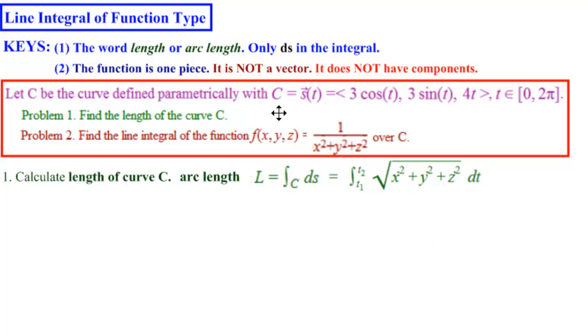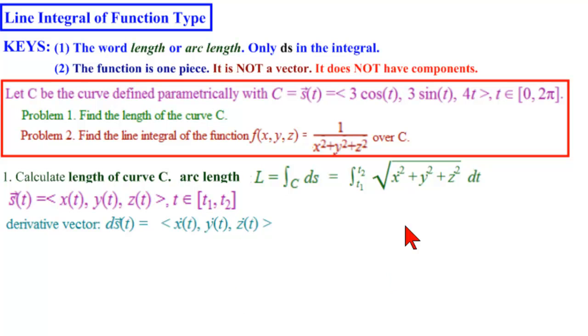We have c equal to s(t). It is a curve defined in 3D with the parameter t. It has three components: the x component, the y component, and the z component. But you only see one variable t, and you have an interval. We need to find the derivative vector ds/dt. That is the magnitude of that vector.